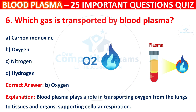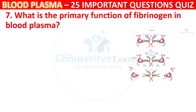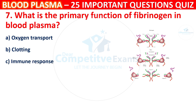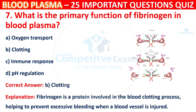Question 7: What is the primary function of Fibrinogen in Blood Plasma? Your options are Oxygen transport, Clotting, Immune response, or pH regulation. The correct answer is B, i.e. Clotting. Fibrinogen is a protein involved in the blood clotting process, helping to prevent excessive bleeding when a blood vessel is injured.